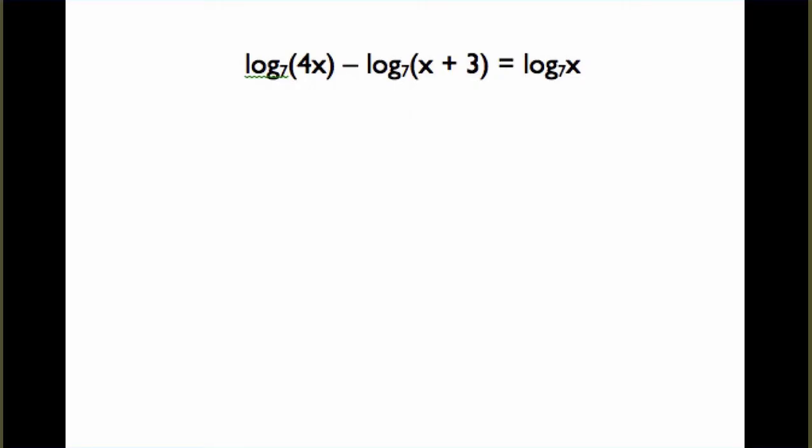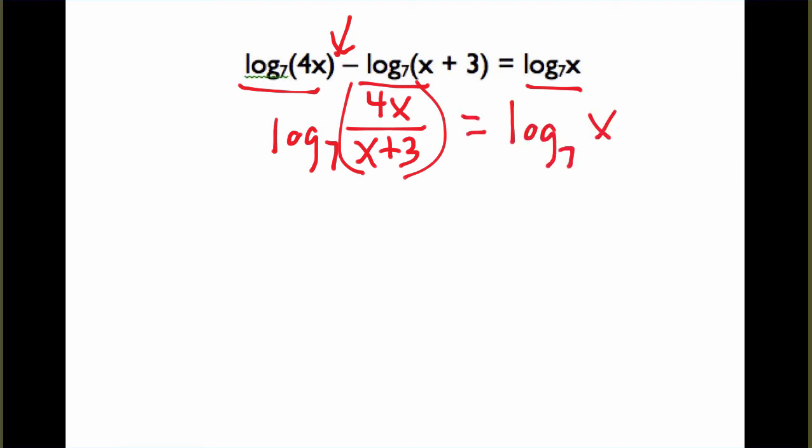Let's look at just one final example here. We have the log base 7 of 4x minus the log base 7 of x plus 3 equals the log base 7 of x. So again, what I notice is everything is inside of a log. So I'm going to just combine each side into one logarithm and then cancel the logarithms out. So on the left side, subtraction means I'm going to have to divide. But I'm keeping the base the same. And on the right side, it's already written as 1.